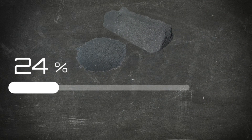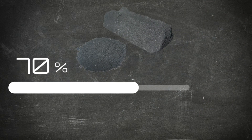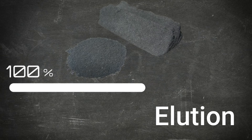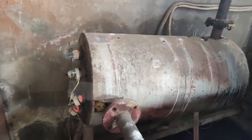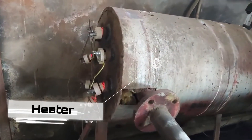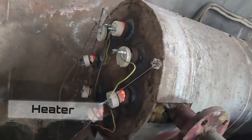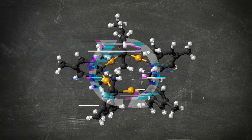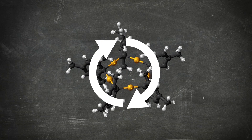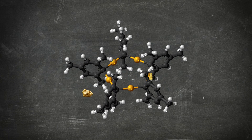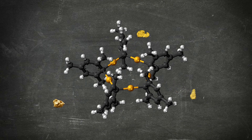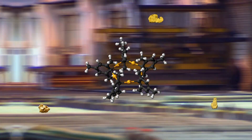Here, the loaded carbon undergoes a process called elution. The carbon granules are placed inside columns and a hot caustic cyanide solution is passed through. This reverses the adsorption process, freeing and stripping the concentrated gold from the carbon back into solution.